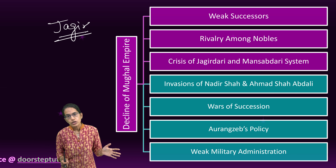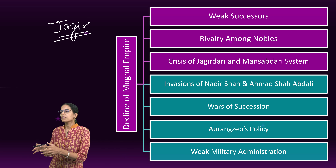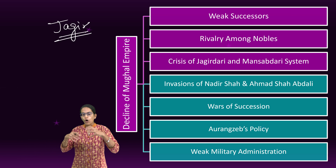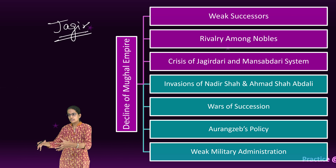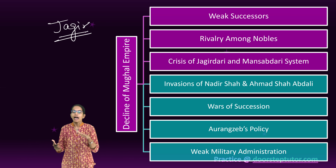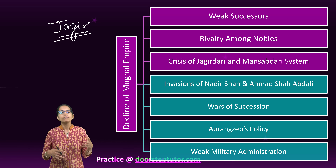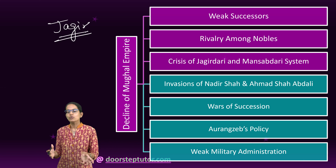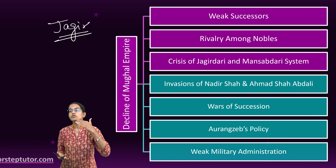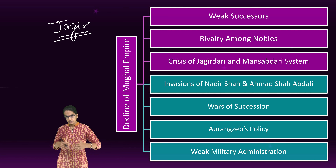The Mansabdari system was the administrative system where officers were given Jagirs to maintain their household and troops. Since the quality of land deteriorated and there was paucity of land, this led to a crisis in the Mansabdari system as well. So there was failure of both the Jagirdari and the Mansabdari systems.